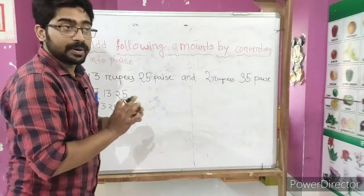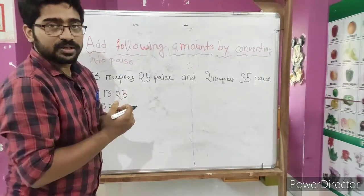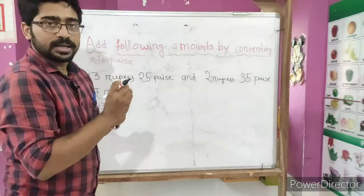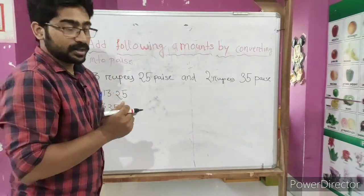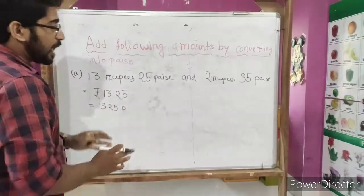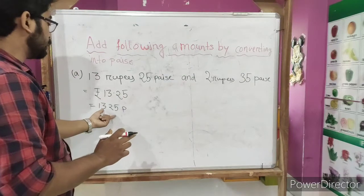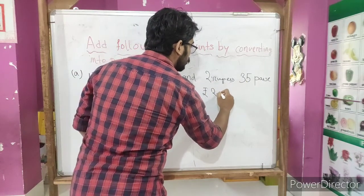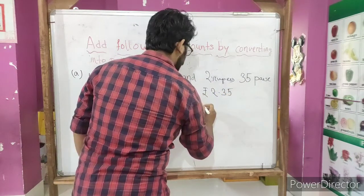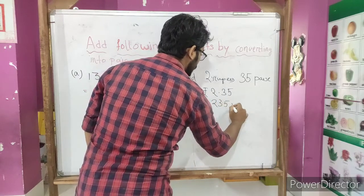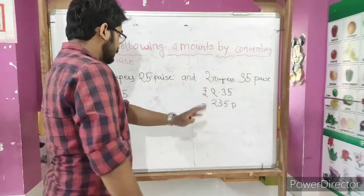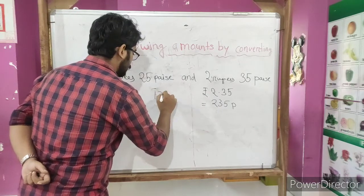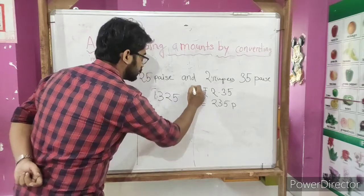For these additions or subtractions, whenever you are given to do some conversion, you need to do it step by step depending upon your marks. If it comes for two marks then you need to do all the steps, and if it comes for one mark then you can directly write it. Now for this addition purpose, no need to do anything. We will just simply convert it into paise. So what has been given? Two rupees 35 paise, so rupees 2.35 equals to 235 paise. Now we need to add this. So let us add: 1325p and 235p.